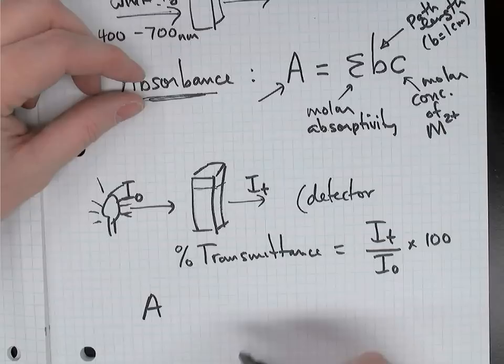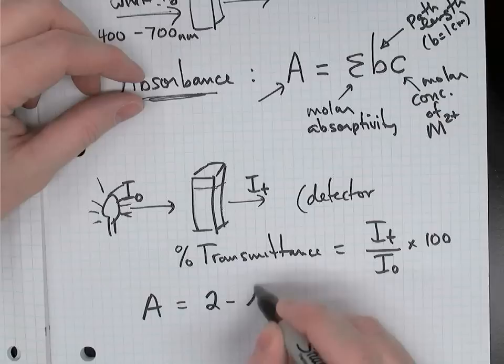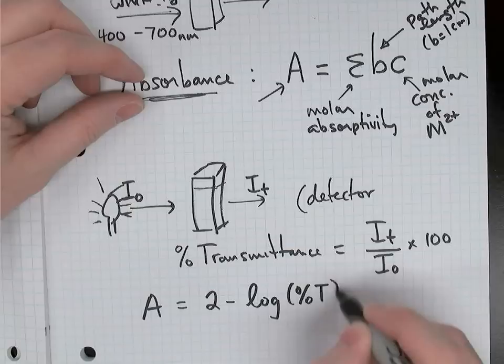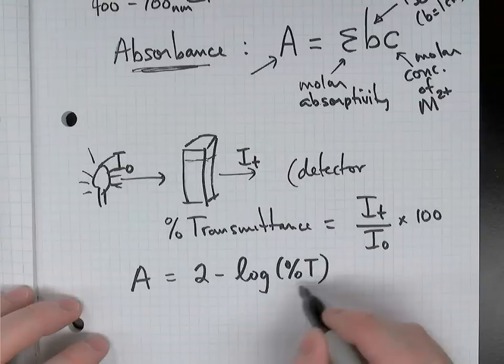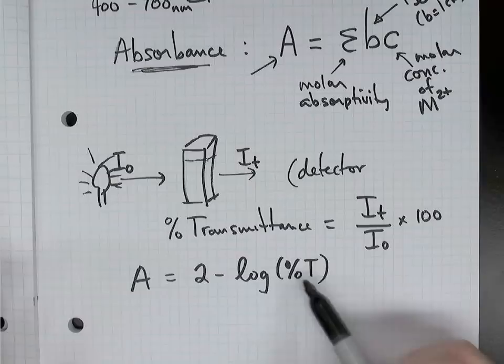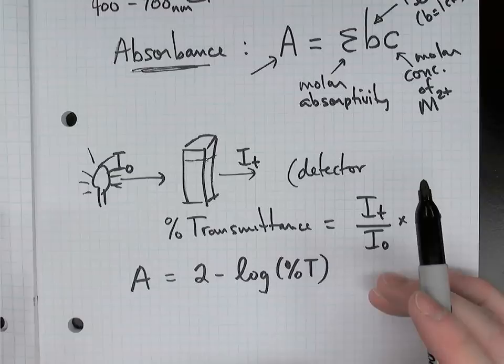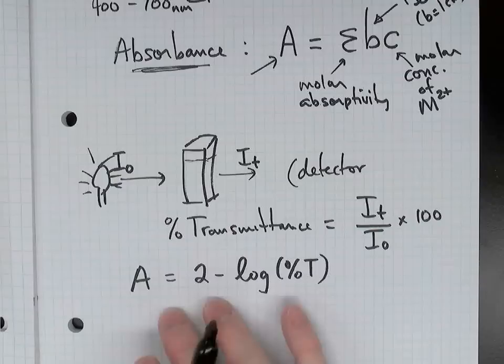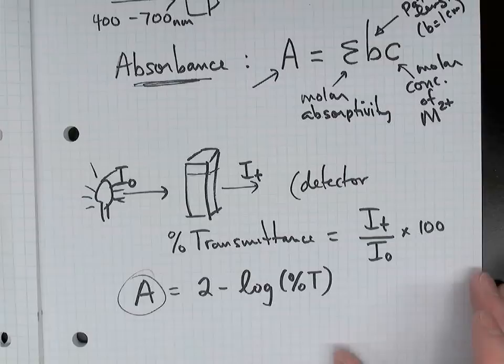Absorbance can be calculated from transmittance using the formula: 2 minus the base-10 logarithm of percent transmittance. For example, if percent transmittance is 100%, the log of 100 is 2, so 2 minus 2 gives zero absorbance. When there's 100% transmittance, there's zero absorbance. Some older spectrophotometers measure transmittance; some newer ones measure absorbance automatically.